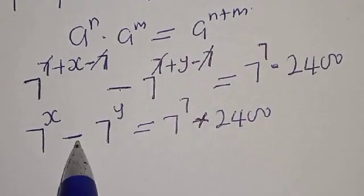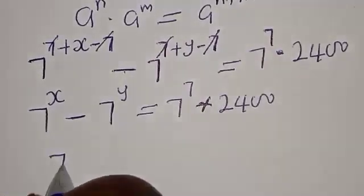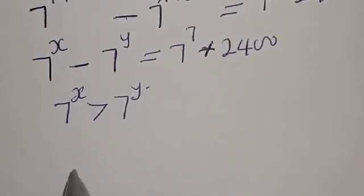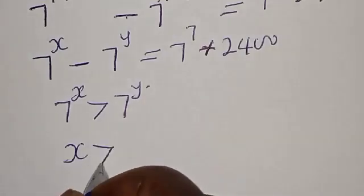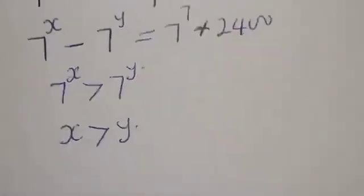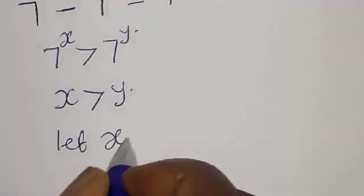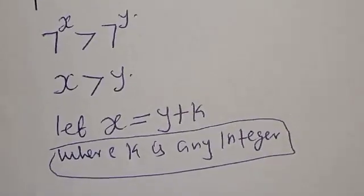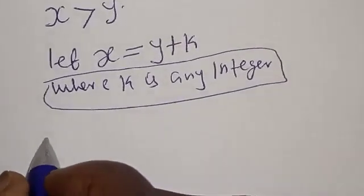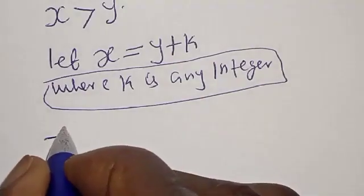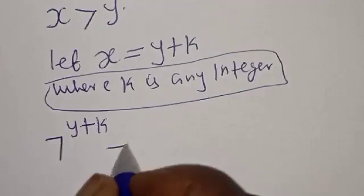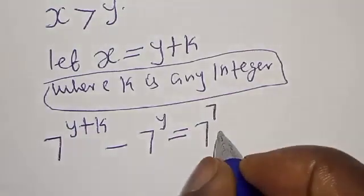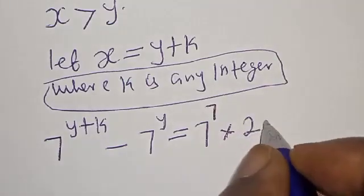Now, since we have 7 raised to power x minus 7 raised to power y, this means that 7 raised to power x is greater than 7 raised to power y. Therefore x is greater than y. So we let x equal to y plus k. Substituting, we have 7 raised to power y plus k, minus 7 raised to power y, equal to 7 raised to power 7 multiplied by 2400.